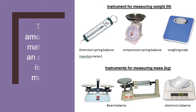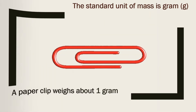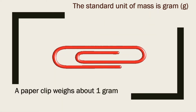What is mass? The amount of matter in an object is its mass. For example, your weight — you measure it using a weighing scale, a beam balance, or an electronic balance. The standard unit of mass is the gram. For example, a paper clip weighs about one gram.